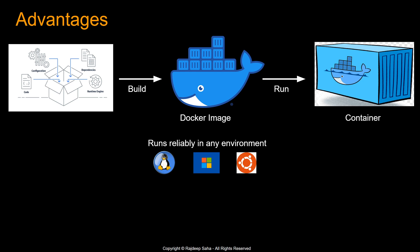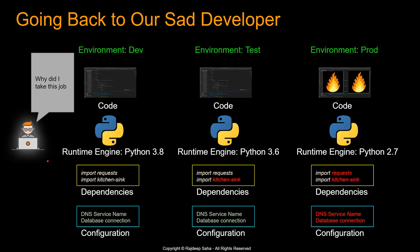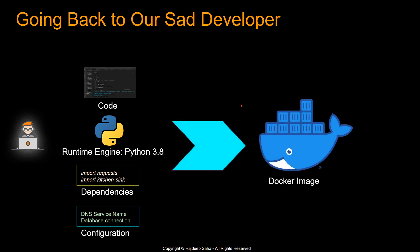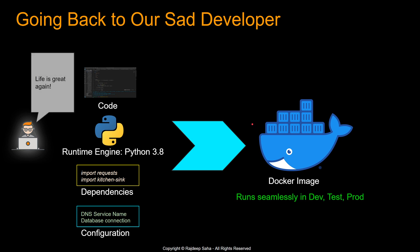What are some advantages of Docker containers? Since you are packaging everything you need to run your code, it is platform independent — truly build it once and run it anywhere. Going back to our sad developer: instead of deploying code in different environments with different runtime engines, he packaged his code, his runtime engine Python 3.8, his dependencies, and any other necessary components into a Docker image. That Docker image runs seamlessly in dev, test, and production. His life is great again.